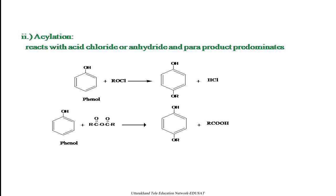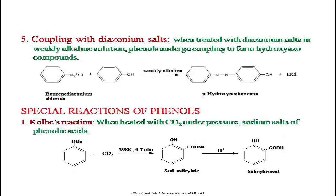The next reaction of phenol is coupling with diazonium salt. When treated with a diazonium salt in a weakly alkaline solution, phenols undergo coupling to form hydroxy azo compounds. For example, benzene diazonium chloride treated with phenol in weakly alkaline medium gives a para-hydroxy azo compound, where the two benzene rings are joined through the azo group, and the product is used as a dye.